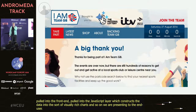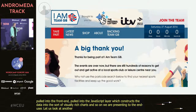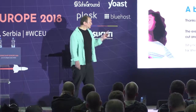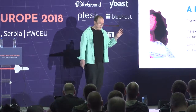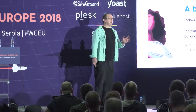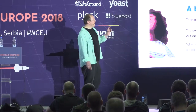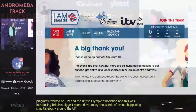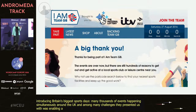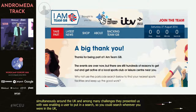Let's look at another example: the I Am Team GB project. This is a project that Pragmatic worked on with ITV, the National Lottery, and the British Olympic Association — introducing Britain's biggest sports day, with many thousands of events happening simultaneously around the UK. Among the challenges was enabling a user to search wherever they were in the UK and return relevant events within distance from their front door.